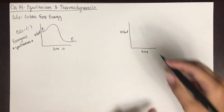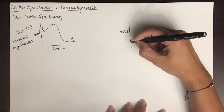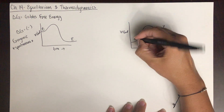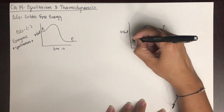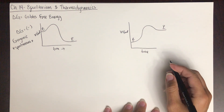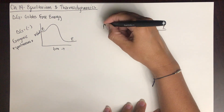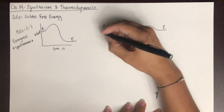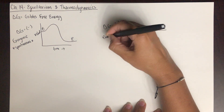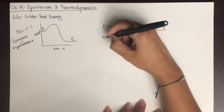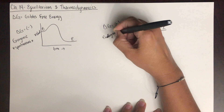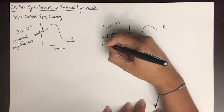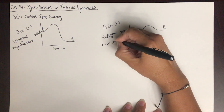The opposite is when the free energy of the products is higher than the free energy of the reactants. That means delta G is a positive number. This is called an endergonic reaction, and this reaction would be non-spontaneous.